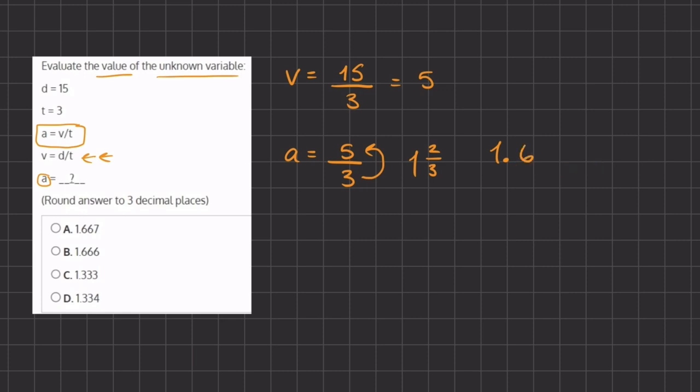...and it's going to continue forever. So we need to stop it after three decimal places like it was asked in the answer, so we need to round. We're going to go to our third decimal place...